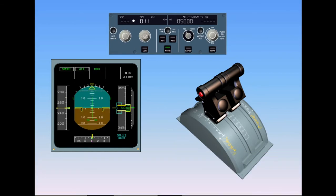When the aircraft reaches the target altitude, the Autopilot Flight Director goes into altitude mode, and the Autothrottle switches to Speed mode, as indicated on the FMA. In this mode, the Autothrottle continuously adjusts the thrust to maintain the target speed.